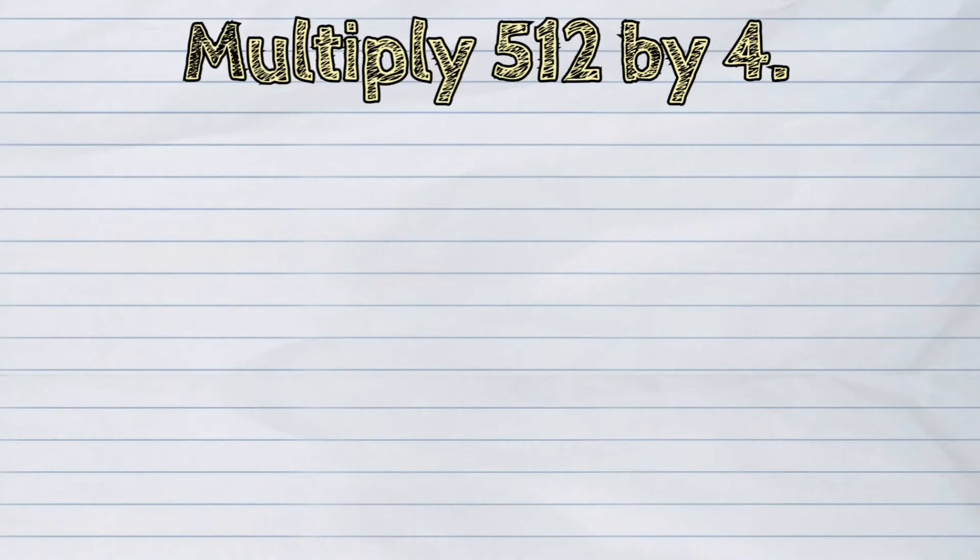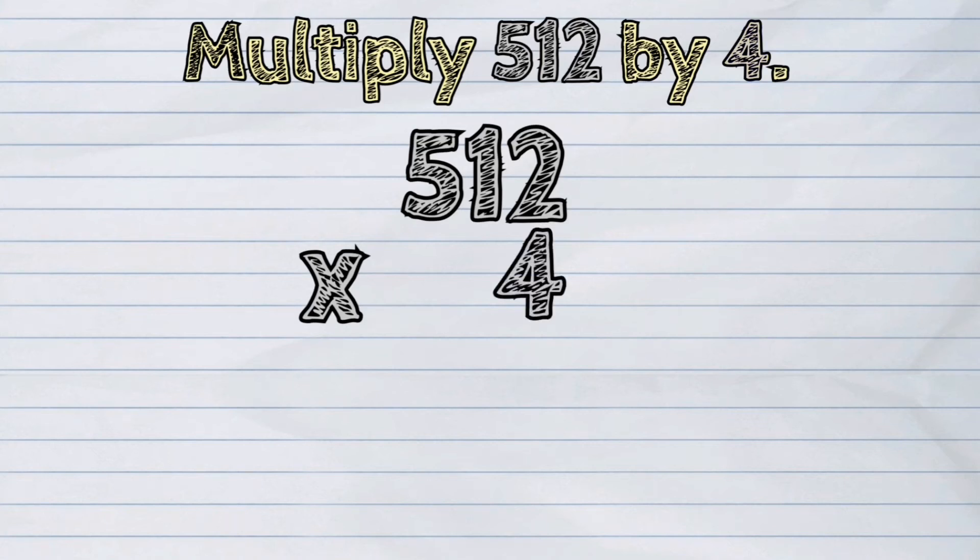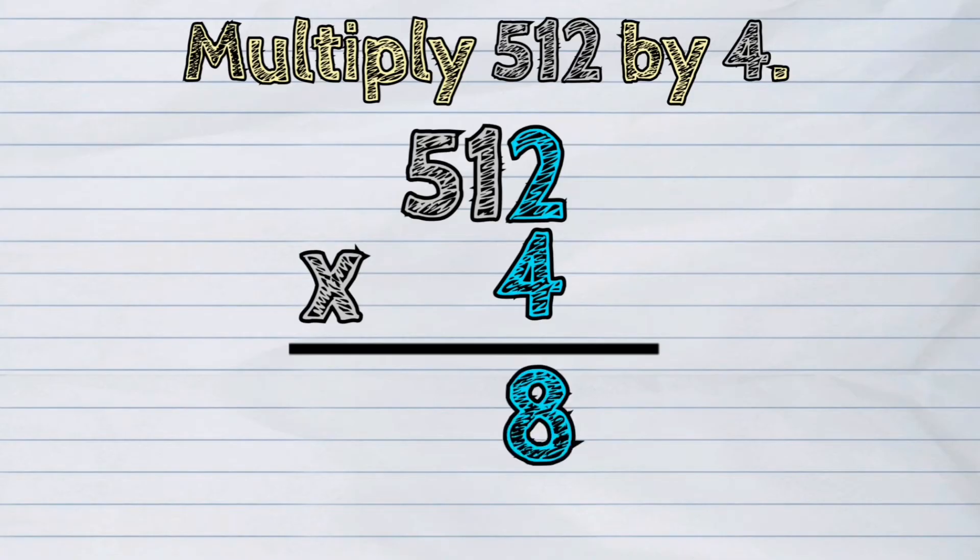Here is another example. Multiply 512 by 4. First, we will multiply the ones by 4. 2 times 4 is 8.